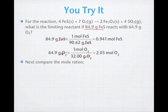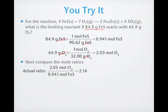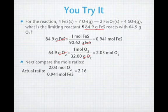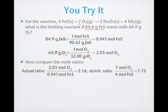Let's take a look at the actual ratio. We're going to put the oxygen on top because it had the higher coefficient. So 2.03 moles of oxygen over 0.941 moles of iron 2 sulfide gives us 2.16 as the ratio. When we calculate our stoichiometric ratio, 7 to 4 is a stoichiometric ratio of 1.75, which means we have more than enough oxygen and the iron 2 sulfide is the limiting reactant.